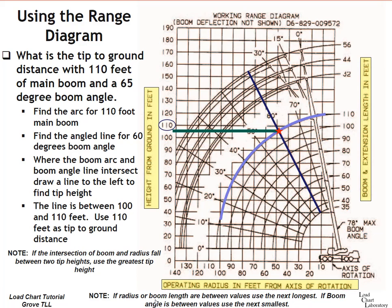And let me read this note again. If the intersection of boom and radius fall between two tip heights, use the greatest tip height. Also, let me read this note down at the bottom. If radius or boom length are between values, use the next longest. If boom angle, which we have in this problem, if boom angle is between values, use the next smallest.